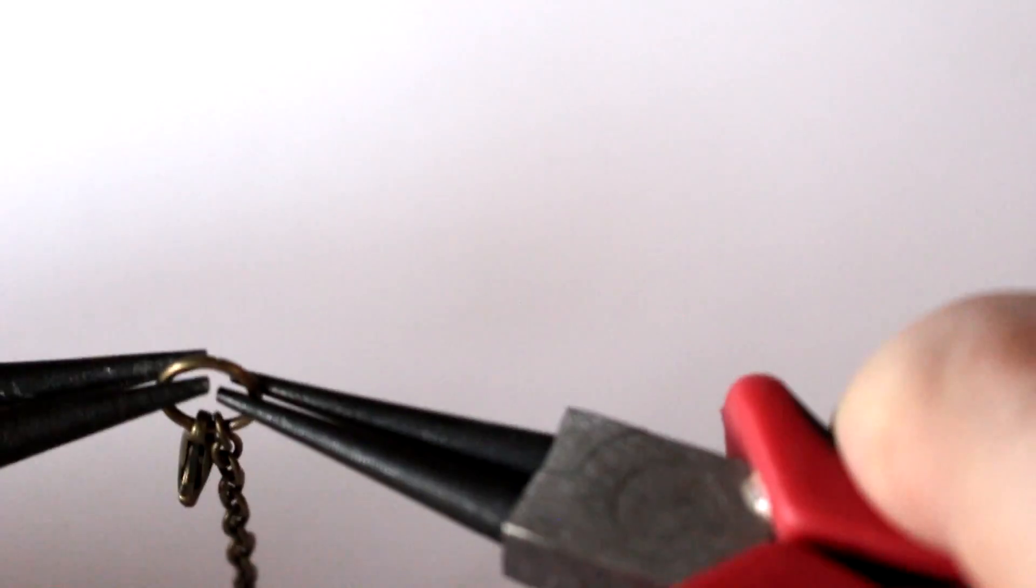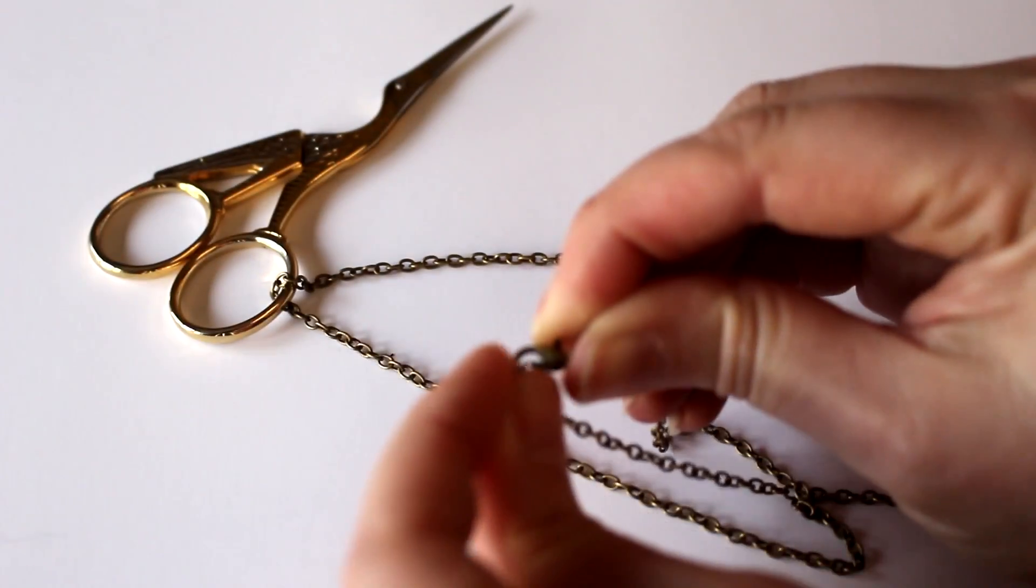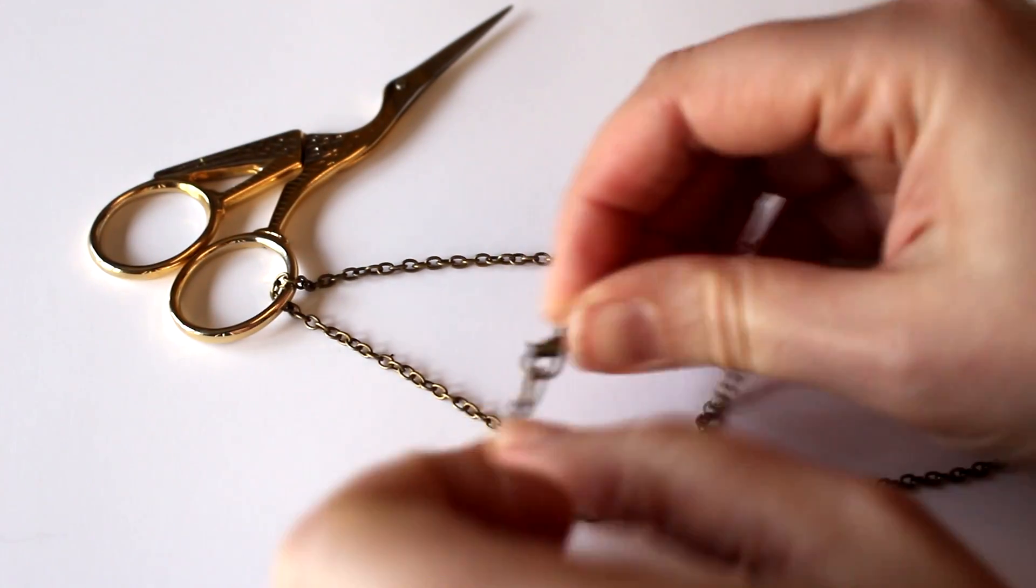Now we close the jump ring, thread one end of the chain through one of the finger holes, fasten the clasp, and hot diggity dog our necklace is complete.